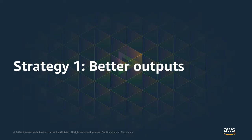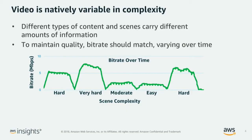As far as better outputs goes, video is natively variable in complexity. As we produce content for our viewers to enjoy, if you analyze it scene by scene, you'll notice the content has varying needs in terms of its fundamental complexity. In order to hit a consistent quality target, some scenes want a lot more bits, whereas some scenes can be completely satisfied at that quality target with a reduced number of bits. Ideally, to maintain quality, we would want bitrate to vary over time to match the varying complexity over time.